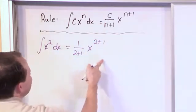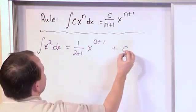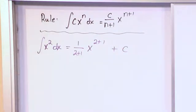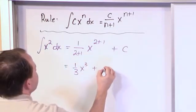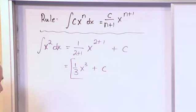And because this is an indefinite integral, we always have to add an arbitrary constant of integration. So what you're going to have is 1 third x to the 3 power plus a constant. This is the answer.